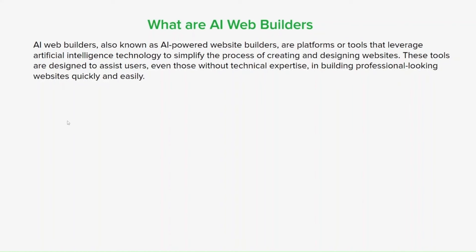AI web builders typically offer a range of features. First, they usually have a drag-and-drop interface that allows you to design your website by dragging and dropping elements onto the page, eliminating the need for manual coding. They also offer a wide selection of pre-designed templates that can be customized to your preferences, and AI algorithms can suggest design elements, layouts, and color schemes based on your inputs or the industry you're targeting.